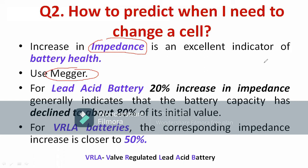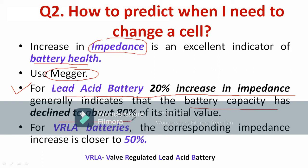Impedance is one of the best indicators of battery health. For a lead-acid battery — used in automobiles and solar PV systems — the thumb rule is: if you find a 20% increase in impedance measured by a megger, then the battery capacity has been reduced to 80%. For a valve-regulated lead-acid (VRLA) battery, a 20% increase in impedance indicates a 50% decline in battery capacity.